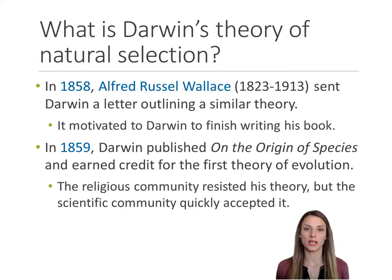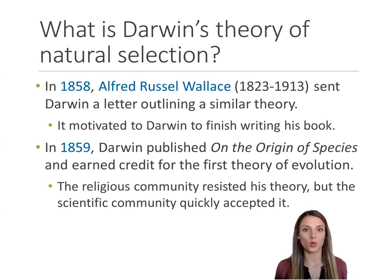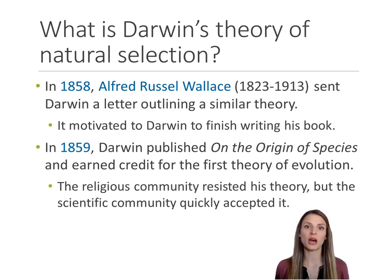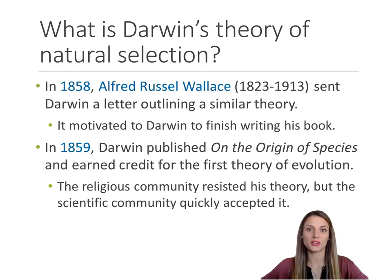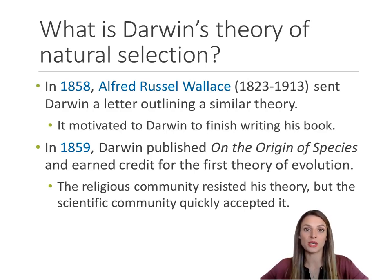Darwin had traveled to South America in the 1830s but didn't publish his theory until 1859. He published it in On the Origin of Species. A year before he published it, he received a letter from a man by the name of Alfred Wallace. Wallace had reviewed some of Darwin's notes and specimens and begun to come up with his own ideas to explain Darwin's observations. This knowledge that someone else was working on a similar idea was enough to motivate Darwin to put the final touches on his theory and get it published. When he published his theory, the religious community resisted it, but the scientific community embraced it. For decades, his theory would be one of the prominent forces in the natural sciences as well as in psychology.